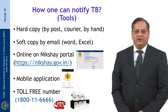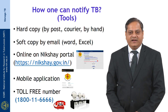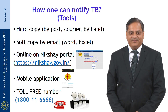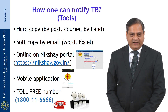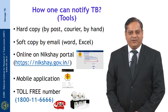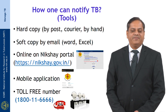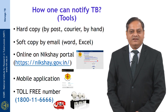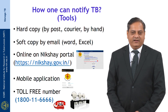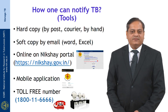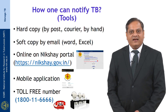Several tools are available for notifying tuberculosis cases to the district TB officer. One can send a hard copy by post, courier, or by hand; alternatively, the district TB officer can send staff to registered health facilities to collect information. A second way is by soft copy via email in Word or Excel format. A third way is direct online reporting through the Nikshay portal, where a health facility can register and self-notify. A fourth way is through a mobile application downloadable from the same website, usable on an Android mobile.